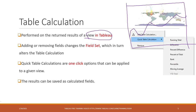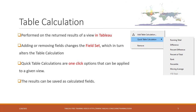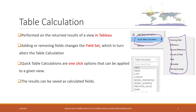Here's how table calculations look. When you have fields on the view, you can just right-click and bring up the table calculations. You can see the most common table calculations depending on the dimensions or measures you brought to the view. You can also run table calculations in a calculated field — just switch to table calculations and run the same calculations. For example, rank is available in both places.